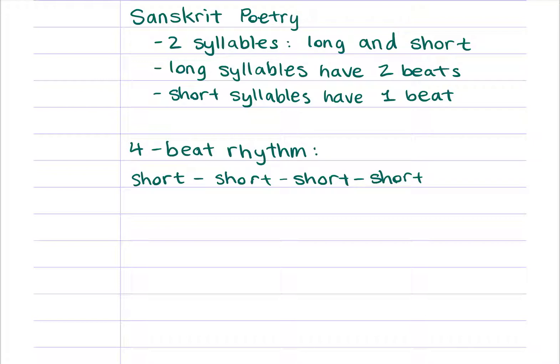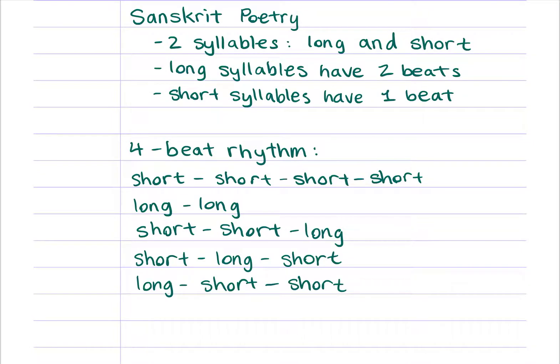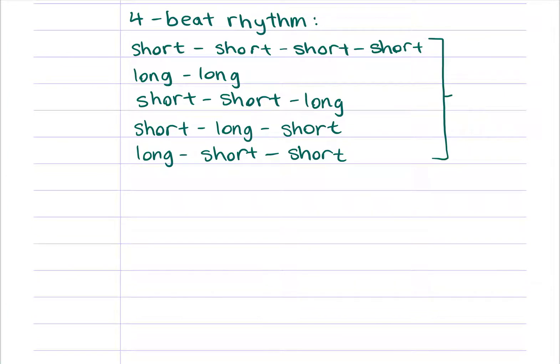How many ways are there to use long syllables and short syllables to form this rhythm? Well, you could have four short one-beat syllables, or two long two-beat syllables. You could also have a combination of two short syllables and one long syllable. In total, that would make five possible combinations.